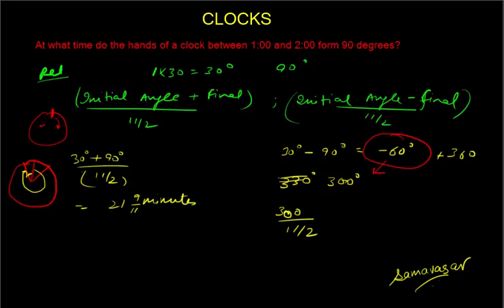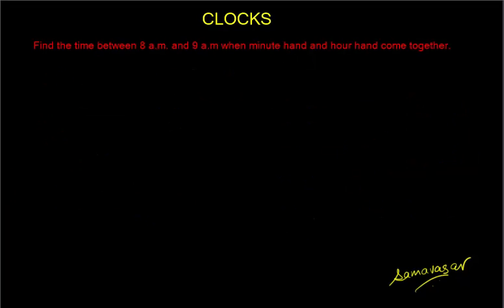So this is what you do whenever you get a negative angle, you just add 360 to it. So when I solve this I get 300 divided by 11 by 2 which is 54 6 by 11 minutes. So as you can see the relative velocity concept basically makes it very easy for you to solve these kind of questions.